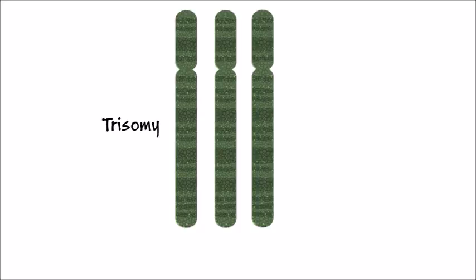This is an example of trisomy. That means that there are three chromosomes instead of two. Trisomy can be a copy of an entire or part of a chromosome. Down syndrome is due to trisomy 21.